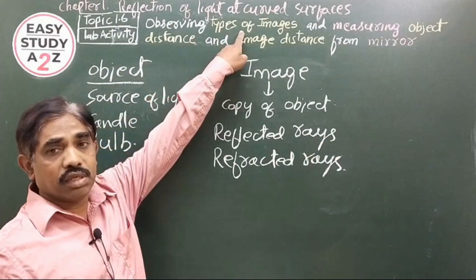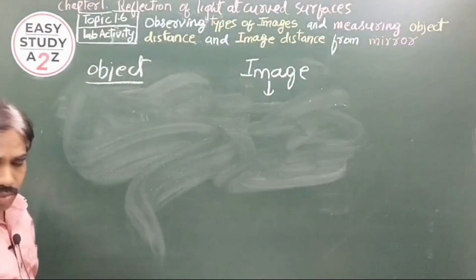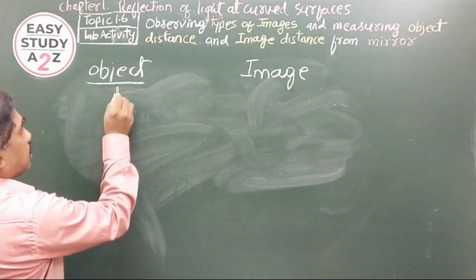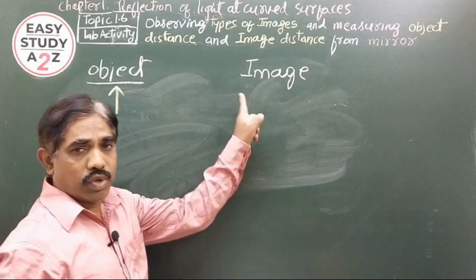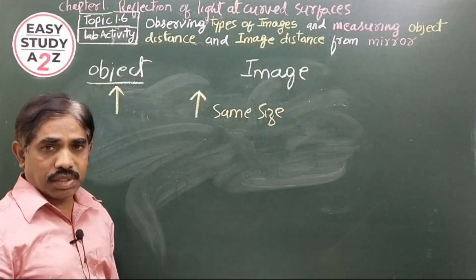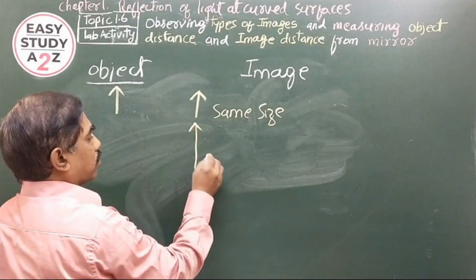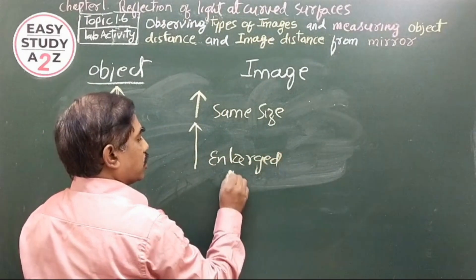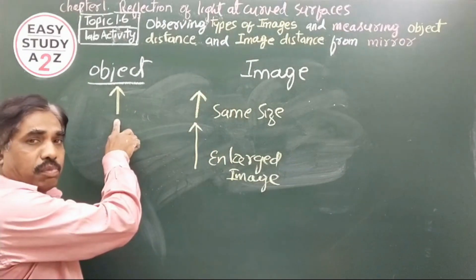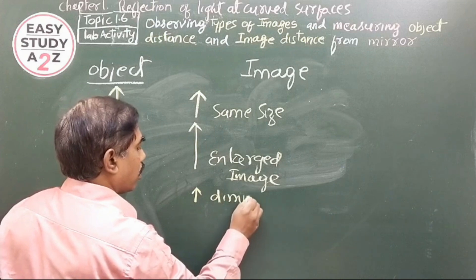Now we have different types of images. When the size of the image is the same as the size of the object, we get a same-size image. When the size of the image is bigger than the object, we get an enlarged image. When the size of the image is less than the size of the object, we get a diminished image.